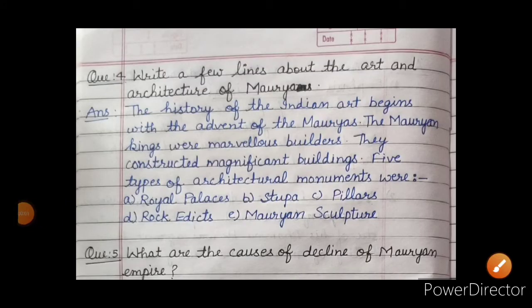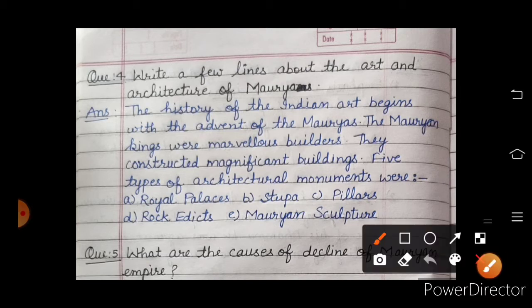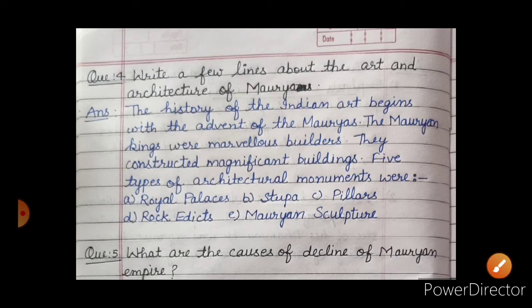Good morning students, welcome to Motilal Nehru School. We are discussing the question and answer of Lesson 8, the Mauryan Empire and Ashoka from history. We have already done the first three questions, and today we are going to discuss the remaining question answers of Lesson 8. Here is our fourth question: write a few lines about the art and architecture of the Mauryas.